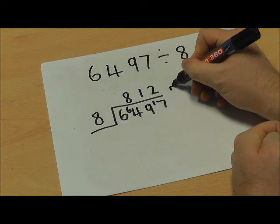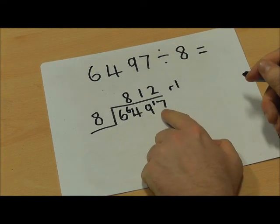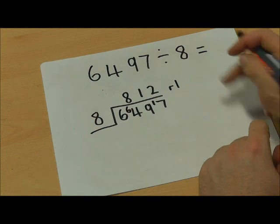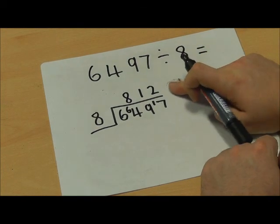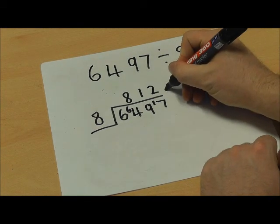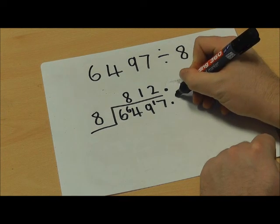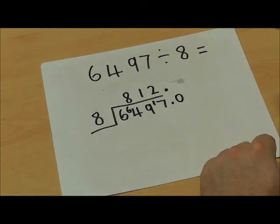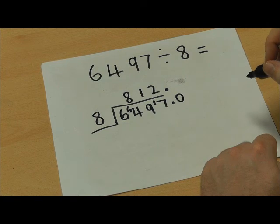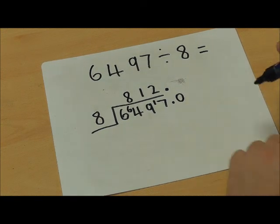Now instead of writing remainder 1, because we have 1 of the 17 left over, I'm going to show you how to turn this into a decimal. So I'm going to put a decimal point here. And then what I need to do is put a 0 there, so that I can use the remainder 1 in an effective way. So you always put a 0 there.